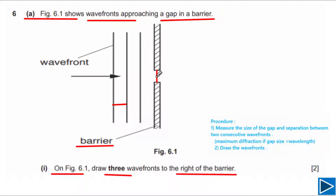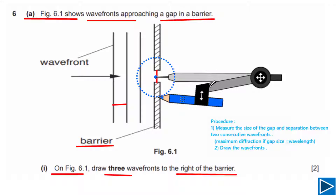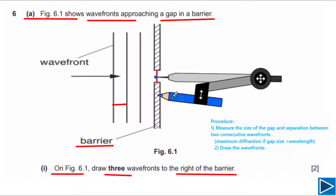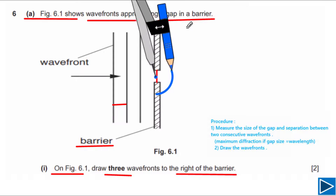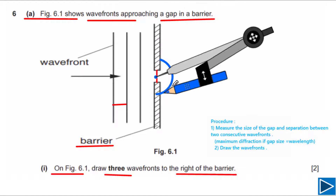In order to draw circular wave fronts, we need to locate the center of this gap — the center is almost here. We use a compass to draw the circular wave fronts. Place your compass at the center and open it so the radius equals the distance to the first wave front. We can now draw our first circular wave front.